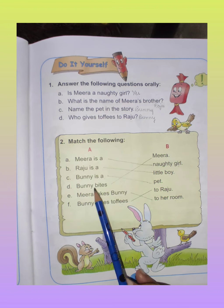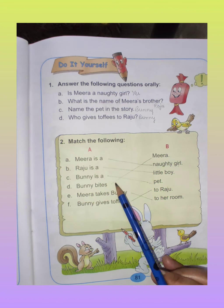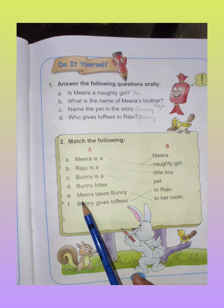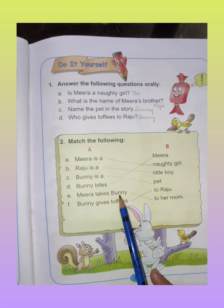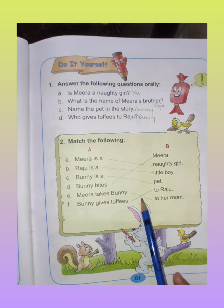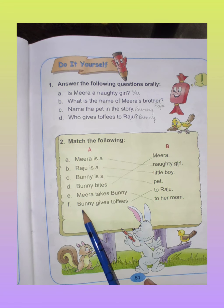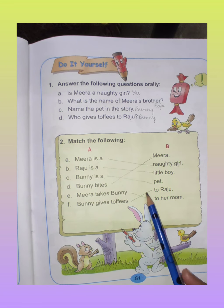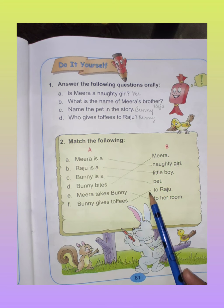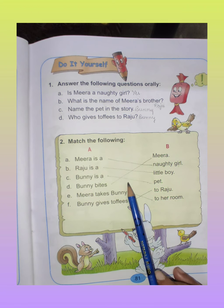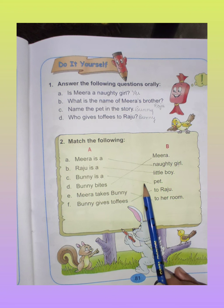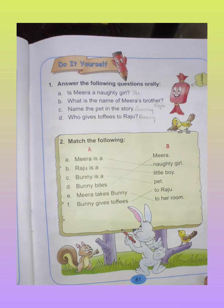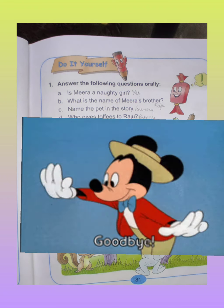Part D: Bunny bites — match it with 'Meera on the toe'. Part E: Meera takes Bunny to her room. And the last part: Bunny gives toffees to Raju — draw a line and match it. This question you have to do in the book. This is all for today. We will meet again with a new video. Till then, bye-bye!